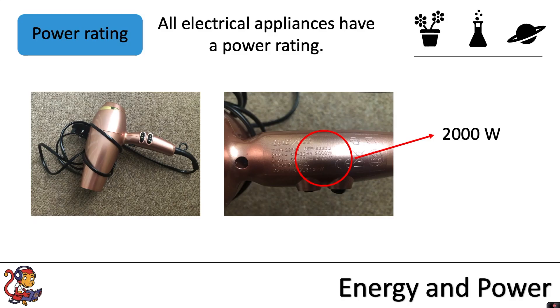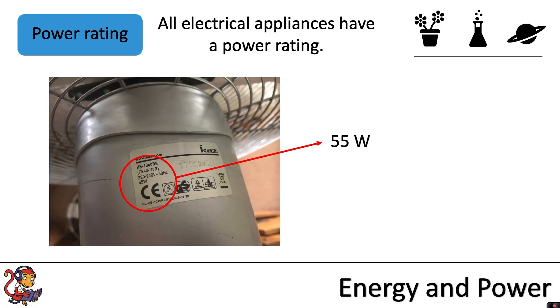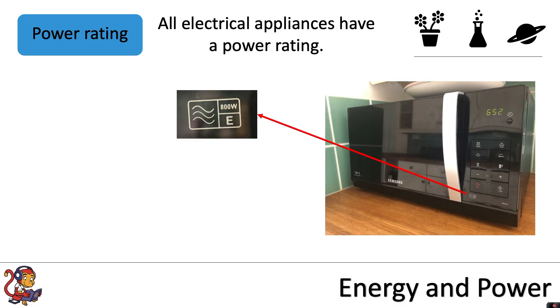All electrical appliances have a power rating. For example, this hairdryer has a power rating of 2000 watts. This fan has a much lower power rating of only 55 watts. And this microwave has a power rating of 800 watts. So three different household appliances, all with a different power rating. But what does this mean?